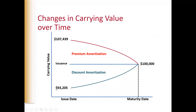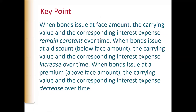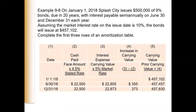When we issue bonds at a discount, they start lower — the issue price is lower — but in the end, at maturity, the bond payable will be at $100,000. When bonds are issued at face amount, the carrying value and the corresponding interest expense are constant over time. When bonds are issued at a discount, the carrying value and interest expense increase over time. When bonds are issued at a premium, the carrying value and the corresponding interest expense decrease over time.